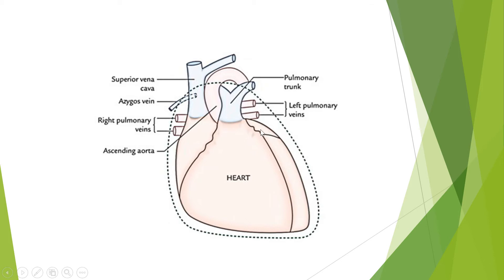From the left atrium, the oxygenated blood will go into the left ventricle. The left ventricle also forms the apex of the heart. From the left ventricle, the oxygenated blood will enter the aorta — the largest vessel — coming out from the left ventricle, draining oxygenated blood to all over the body.